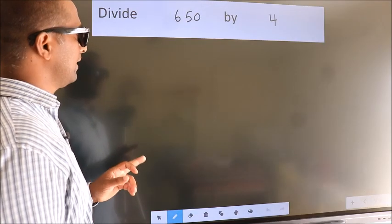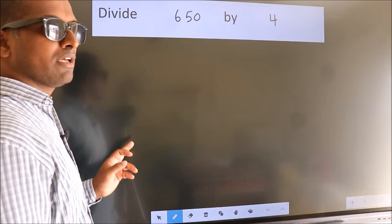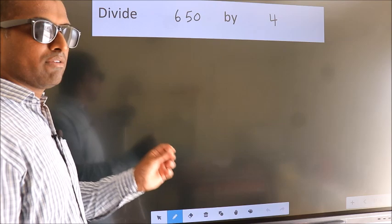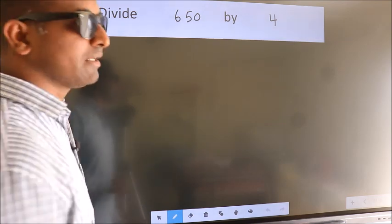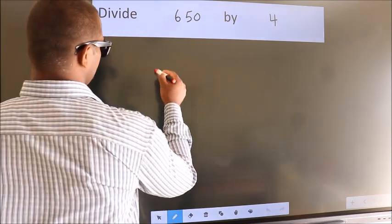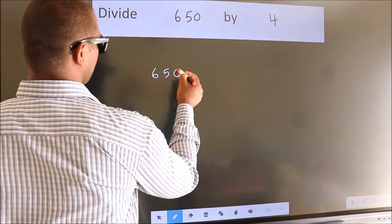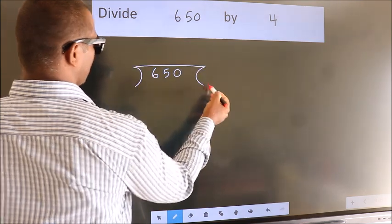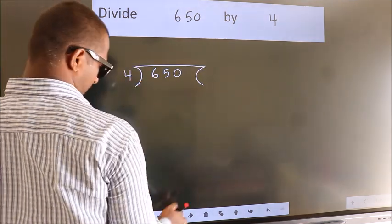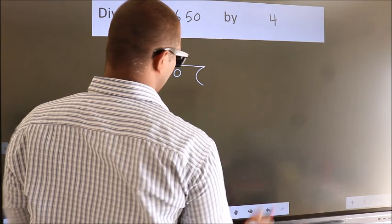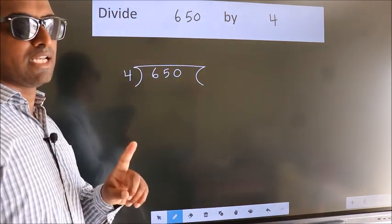Divide 650 by 4. To do this division, we should frame it in this way: 650 here, 4 here. This is your step 1.